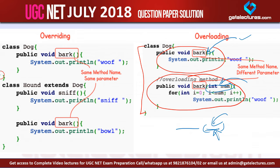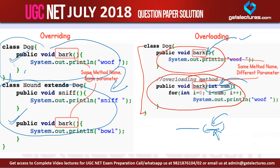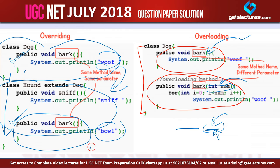But method overriding means we have one class with a method, and another class that extends the first class. The difference is that both these classes implement the same method — a method with the same name — but they may have different functionalities. So for the child class that inherits the first class, its method is overriding the parent's method. In method overriding, the signature can be the same, but the functionalities can be different according to the overriding.